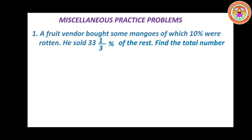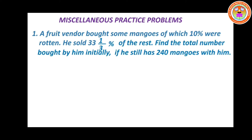A food vendor sold 33 and 1/3 percentage of the rest. Find the total number of mangoes bought by him initially, if he still has 240 mangoes with him. A food vendor is a food seller. He bought some mangoes of which 10 percentage were rotten.